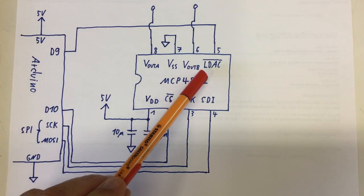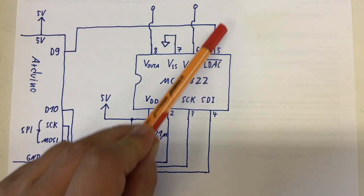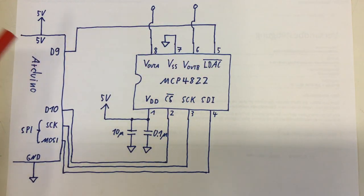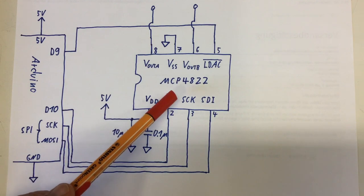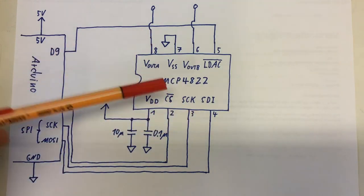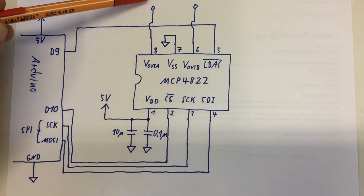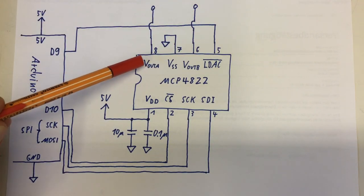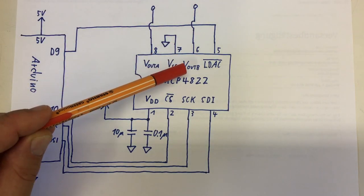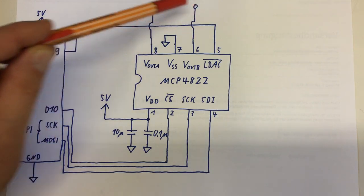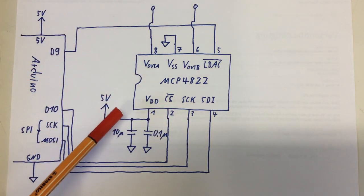The LDAC pin will be controlled by the Arduino digital nine. But in the context of this video, I guess we leave that simply at low. So basically everything we load via the SPI interface into that thing will be directly translated into analog voltages here coming out at VoutA and VoutB. And these two outputs will be connected to the oscilloscope.